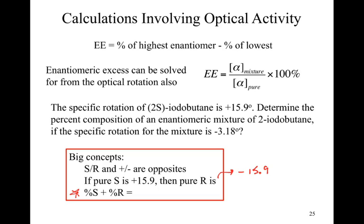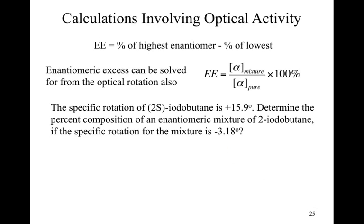The other big assumption that most students tend to miss is this last one. If I take the percent of S and I add that to the percent of R, instead of doing the subtraction like the enantiomeric excess asked for, I add them. What should I get as an answer? Well, there's only two possibilities. So it's going to come out to be 100%, by definition. We now can go through and solve the question with this information.